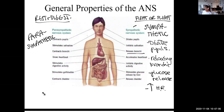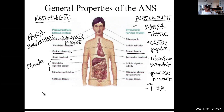Parasympathetic effects are the opposite: pupils tend to be contracted, the bronchi contracted, the heartbeat slower, but the digestive system is stimulated — which fits with the name 'rest and digest.'